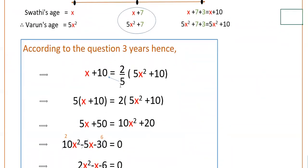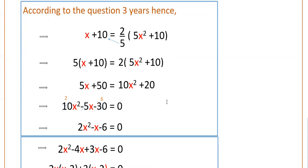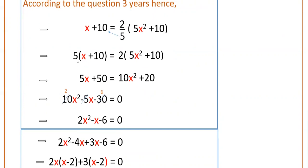Now solve this equation. Multiply both sides: 5 into (X plus 10) equals 2 into (5X squared plus 10). So 5X plus 50 equals 10X squared plus 20. Rearranging: 10X squared minus 5X minus 30 equals 0.